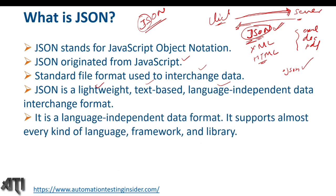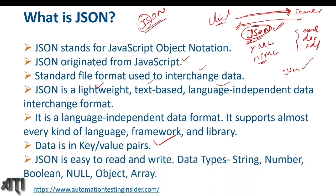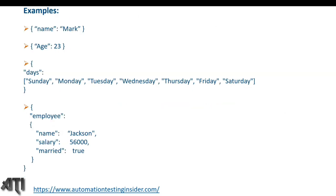JSON is language-independent and supports almost every kind of language, framework, and library. Data is stored in key-value pairs, which I'll show in examples. JSON is easy to read and write. The supported data types for values are: string, number, boolean, null, object, and arrays.